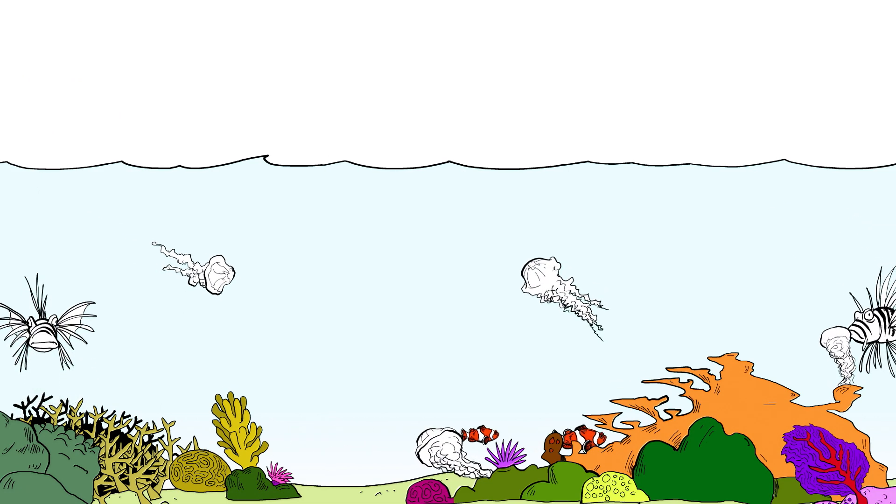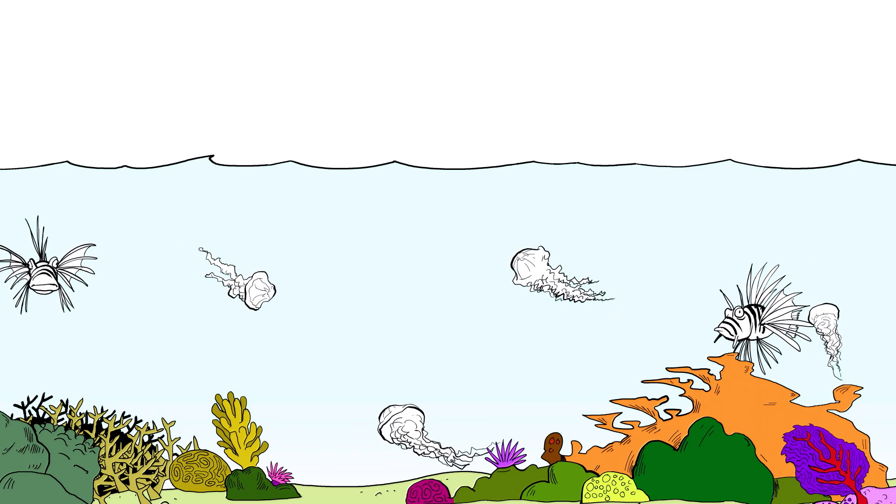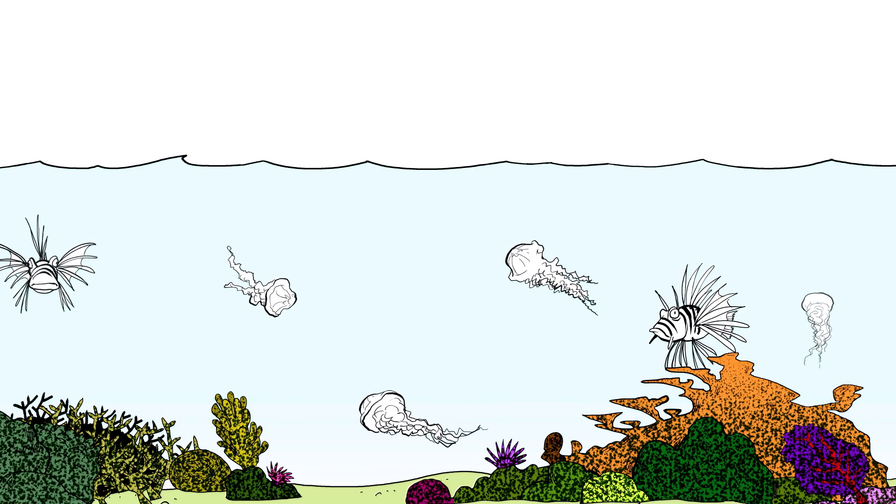Certain species flourish at the expense of other species. With the removal of plant-eating fish, algae grow rampant and smother the coral.